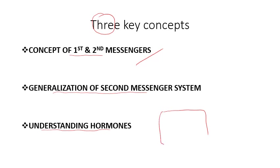We have a cell — let's suppose this is a cell. We discussed the same thing in Vibrio cholerae when we were discussing bacteria. Now, what is the first messenger? The first messenger is a ligand that attaches to this extracellular receptor, and it may be a hormone or it may be a neurotransmitter.